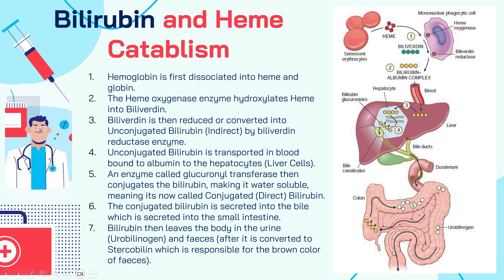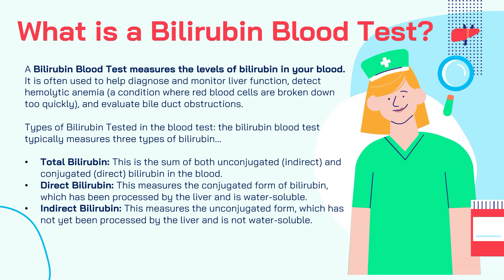This is basically what happens during the entire process of hemoglobin breakdown, which is constantly occurring in the body, producing bilirubin. A bilirubin blood test measures the levels of bilirubin in your blood. It is often used to help diagnose and monitor liver function, detect hemolytic anemia — a condition where red blood cells are broken down too quickly — and to evaluate bile duct obstructions.